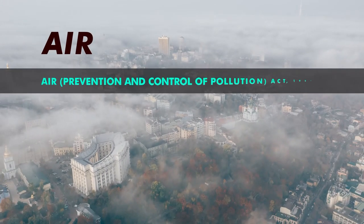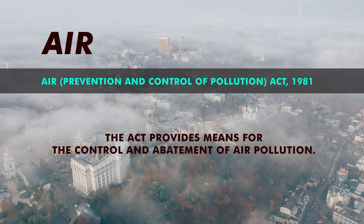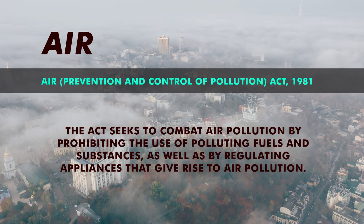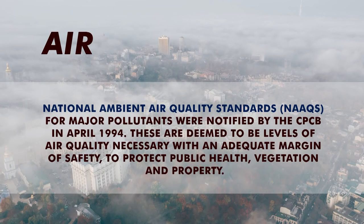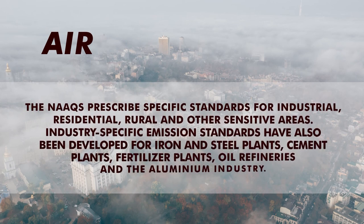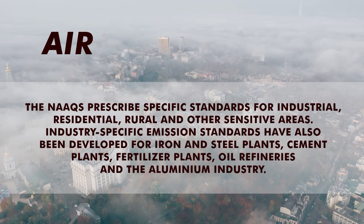For air, there is the Air Prevention and Control of Pollution Act 1981, which provides means for control and abatement of air pollution. This act seeks to combat air pollution by prohibiting the use of polluting fuels and substances, as well as by regulating appliances that give rise to air pollution. Under this act, if any industrial plant is being established or operating in a pollution-controlled area, it requires consent from the state boards. The boards are also expected to test the air in the pollution control area and inspect the pollution control equipment and manufacturing processes. Then there are National Ambient Air Quality Standards (NAAQS), notified by the Central Pollution Control Board in April 1994, for all pollutants. These are deemed to be the levels of air quality necessary with an adequate margin of safety to protect public health, vegetation, and property.